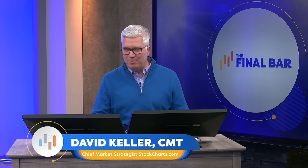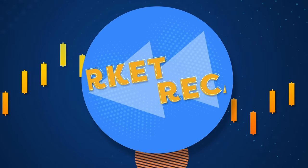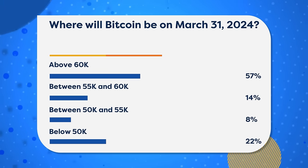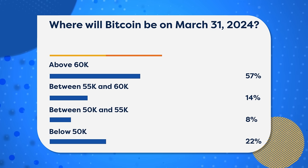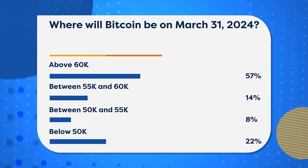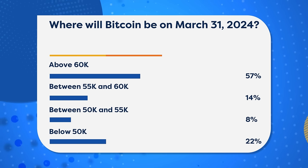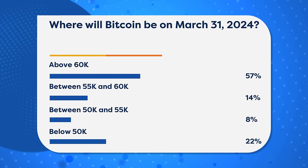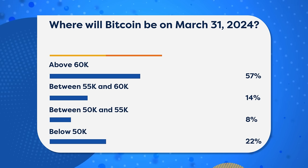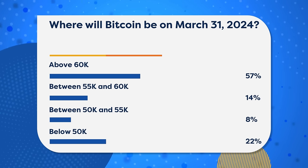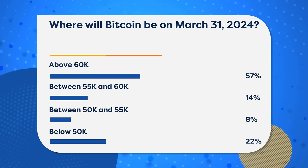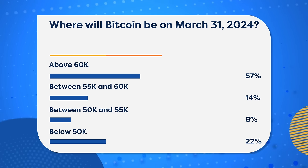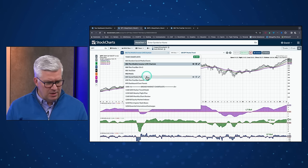Before we get to the charts, I want to share a poll question asking where will Bitcoin be on March 31st, 2024. Let's bring out our crystal ball. I asked above 60,000, and 57% of you chose that. What's funny is I set this question up a couple weeks ago when 60K seemed like a nice upper threshold. How things have changed in just a week or two. Almost a quarter of you said we'd be below 50,000, thinking that exponential rise would be given back.